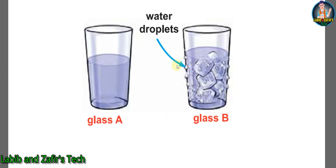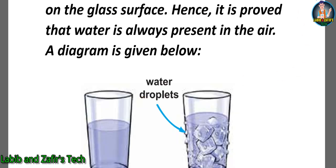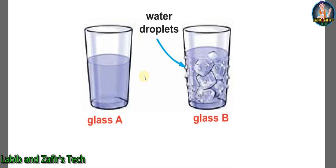A diagram is given to illustrate this. In glass A there is water, and in glass B there are some ice cubes. Due to the ice cubes, the water vapor from the air condenses and forms water droplets on the outside of glass B.